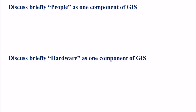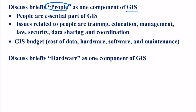Discuss briefly people as one component of GIS. Anything in this world is by the people and for the people. In GIS, the major role is played by people. People are an essential part of GIS. Issues related to people include training, education, management, law, security, data sharing, and coordination.